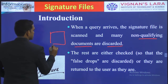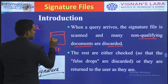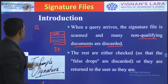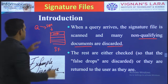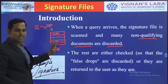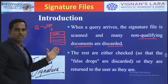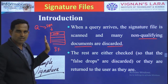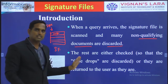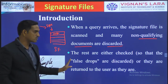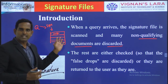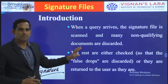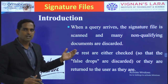So basically, we have a signature file containing a sequence of signatures stored in a text file. When a query arrives, we take its signature and match it against all signatures in the file. Documents that do not qualify are discarded, false drops among the remaining results are also discarded, and whatever results remain are provided to the user — the best possible results.